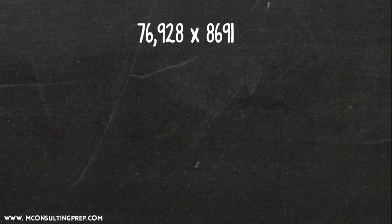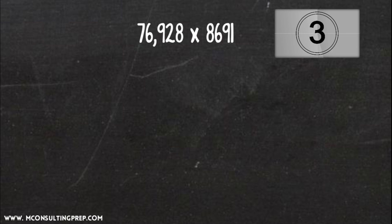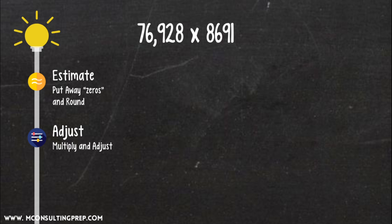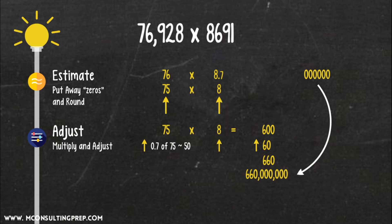76,928 times 8,691. Okay, how was it? Here's my method. Step 1. Take out six zeros in total. It becomes 76 times 8.7. Then round. We take 75 times 8 because most people know 75 times 2 equals 150. 75 times 8 equals 600. We will need some big adjustments later, but this rounding makes the calculations so much faster. Step 2. 75 times 8 equals 600. Adjust up 0.7 of 75 is roughly 50. Adjust up another time for the 76. The total adjustment should be 60. We have 660. With zeros, we have 660 million. The correct answer is 668,581,248.